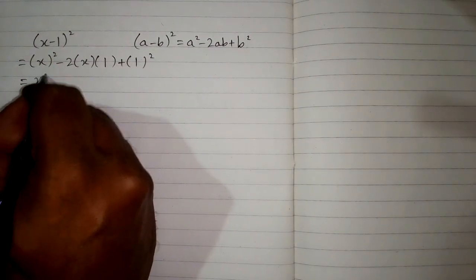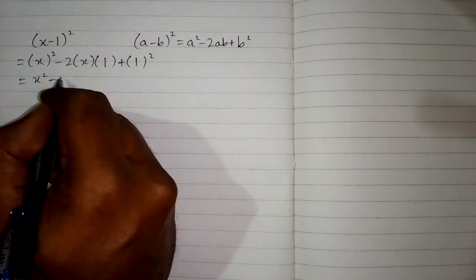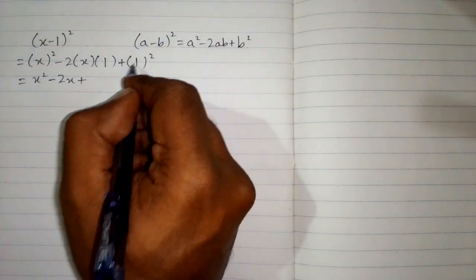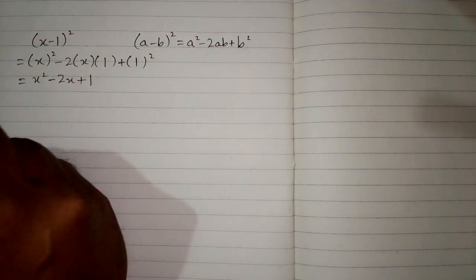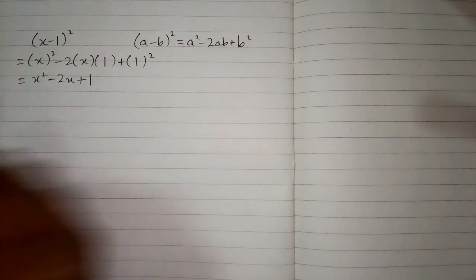Now square of x is x square, then minus 2 times x is 2x, and 2x times 1 is again 2x, then plus square of 1. Square of 1 is 1. So x minus 1 the whole square is equal to x square minus 2x plus 1.